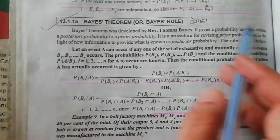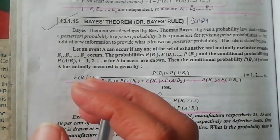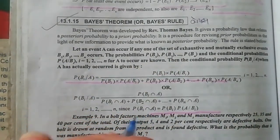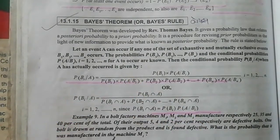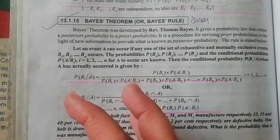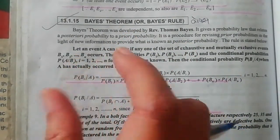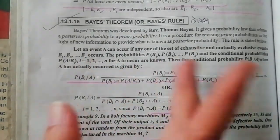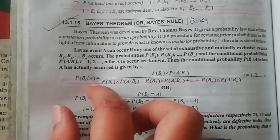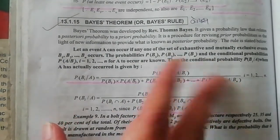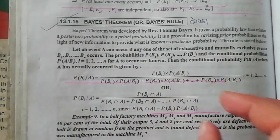We use Bayes Theorem when we have two sets of objects. Up to now we saw calculations based on one object — for example, selecting two different colored balls from one bag in two successive draws. Now, instead of one bag, we have multiple bags. For instance, selecting a red ball from one bag and a blue ball from a second bag. Here we also use conditional probability.